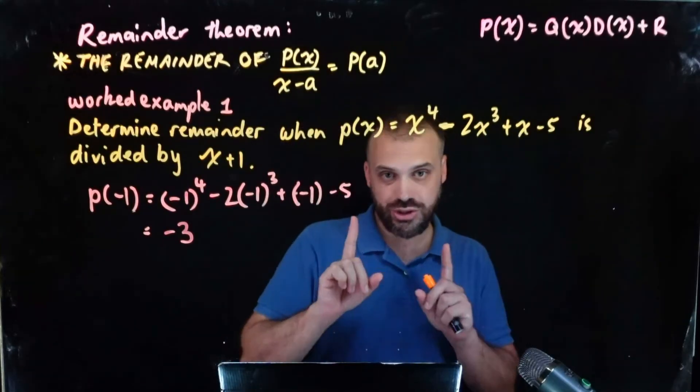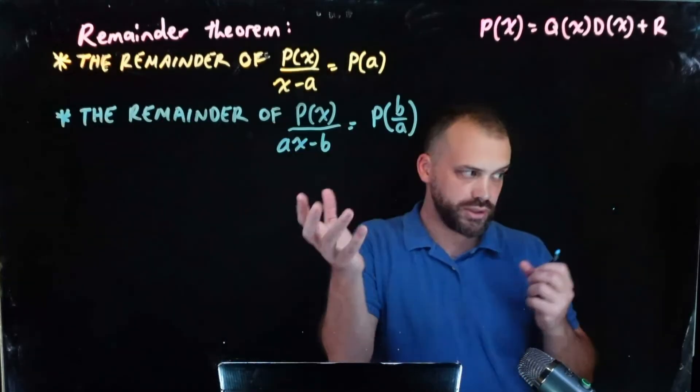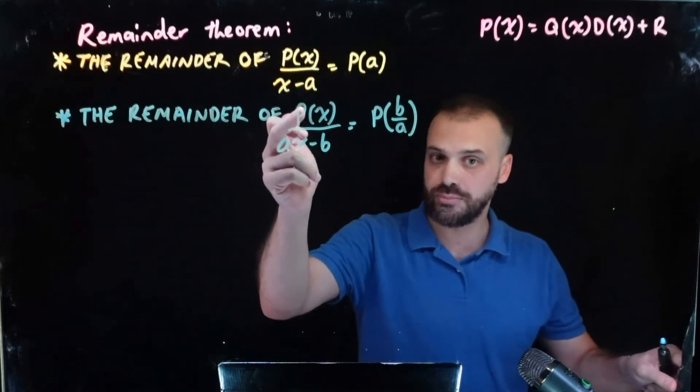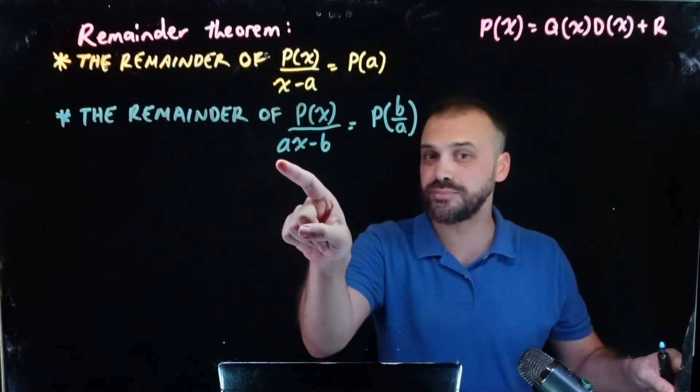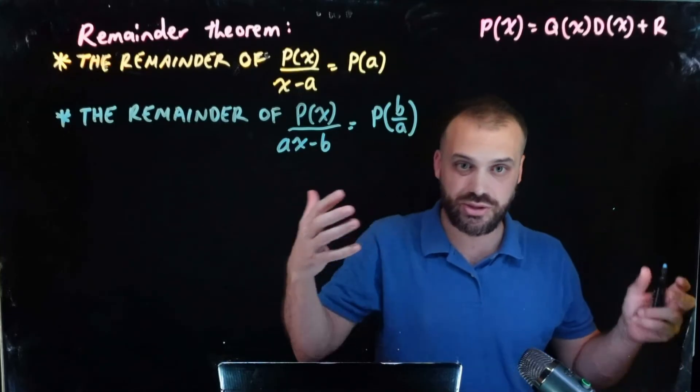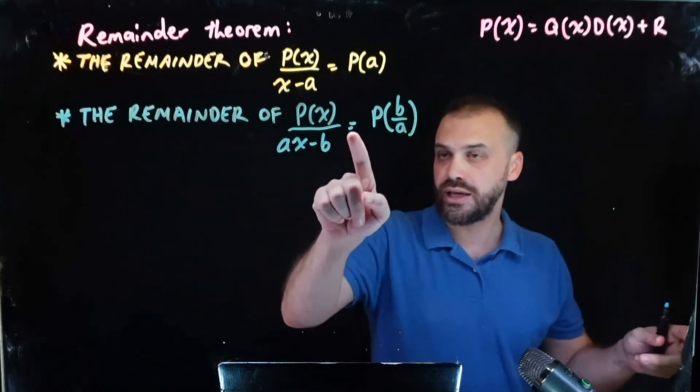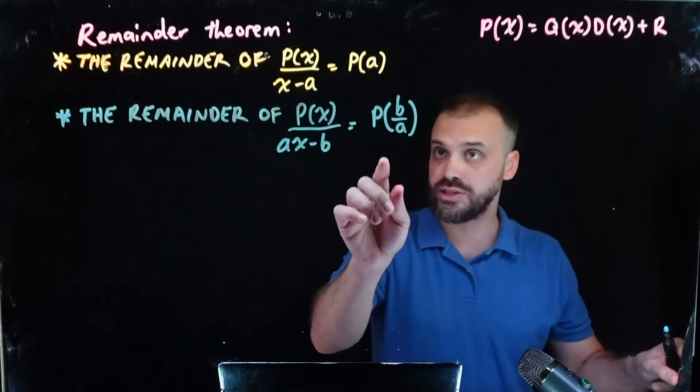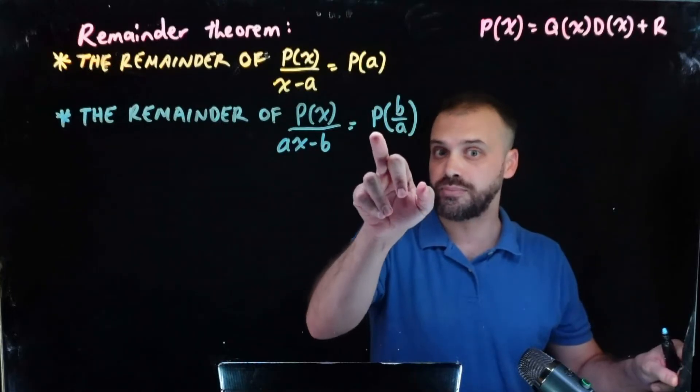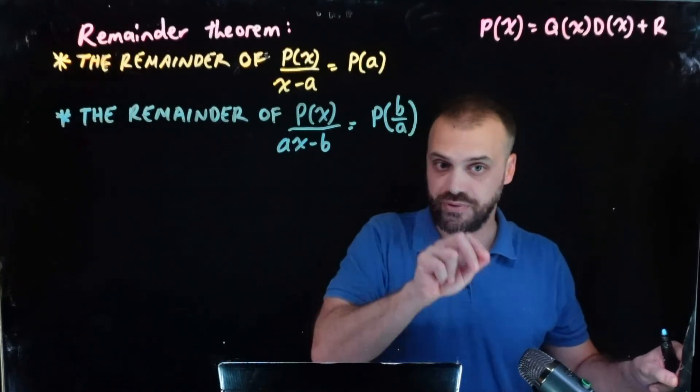Alright, that is the remainder theorem for a very simple linear factor of x minus a. We can generalize it just a little bit further. So this is the more general one. If you've got a polynomial p(x) and you divide it by ax minus b, so it's still a linear factor, the remainder is going to be equal to p of b over a.